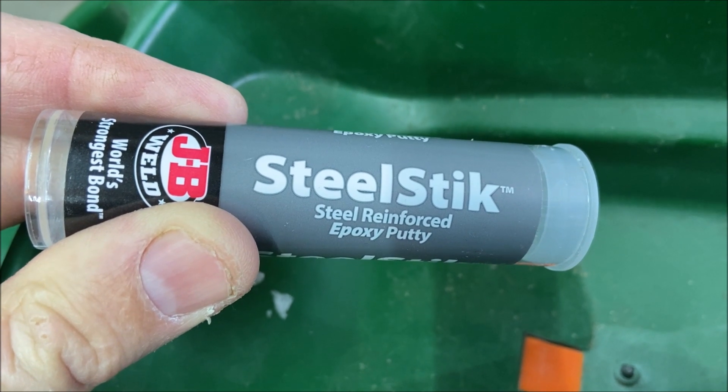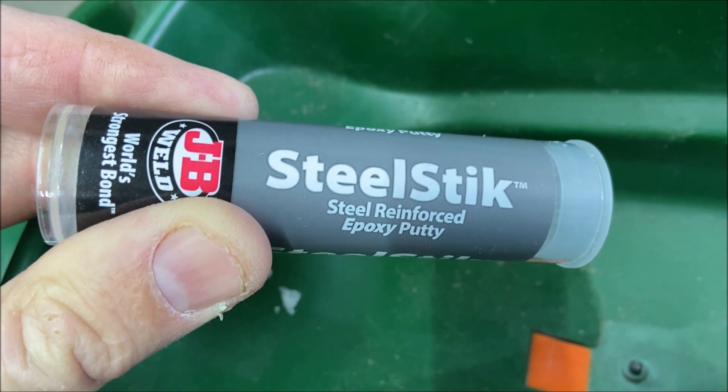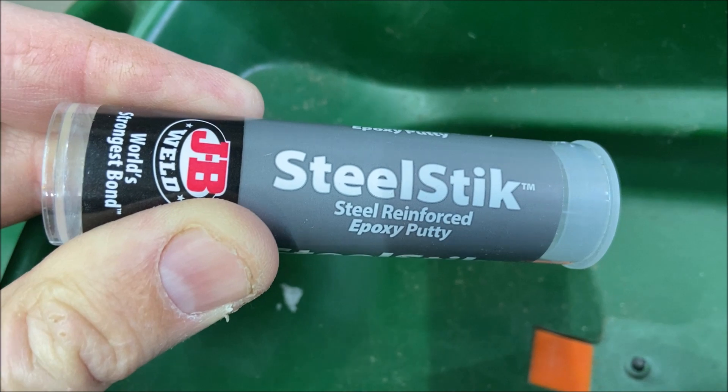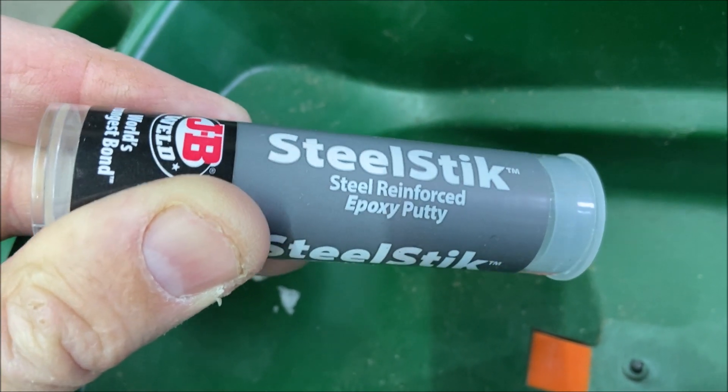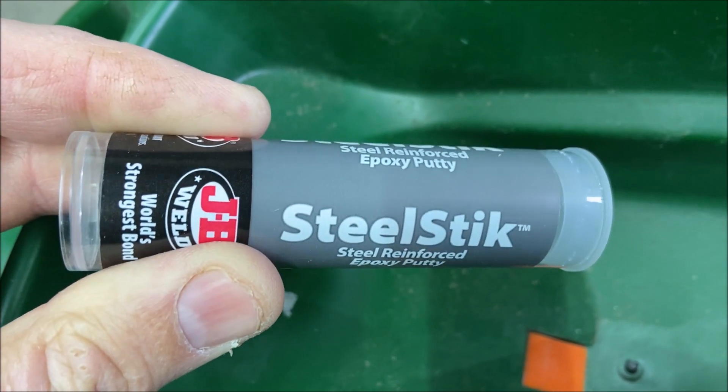This is a two-part material that you knead onto itself. When all the color is the same and there are no streaks, you form it around whatever you want, and a couple hours later it's there and stuck forever.